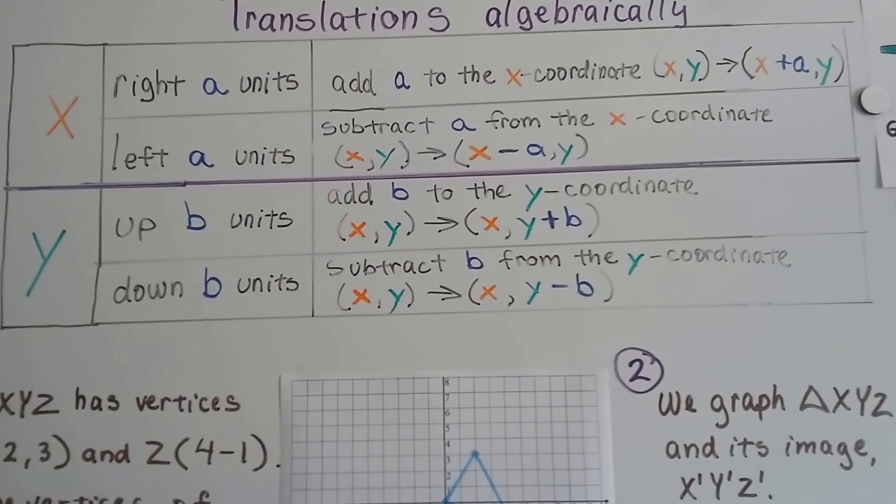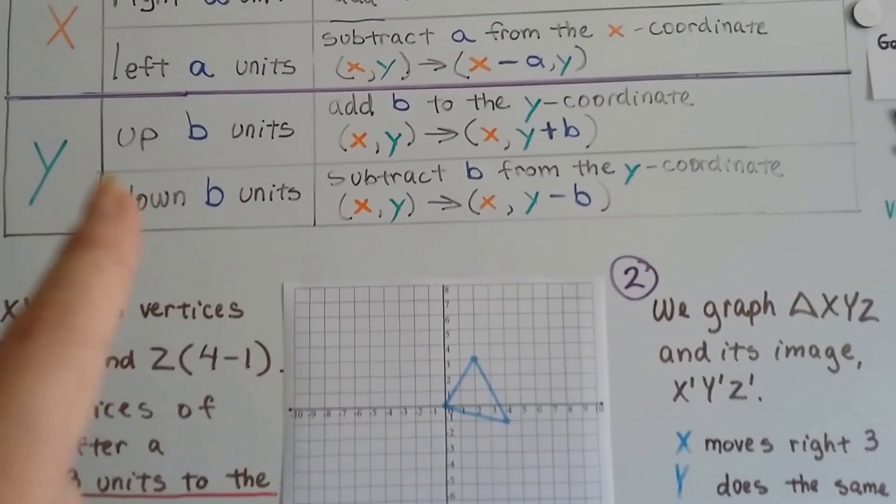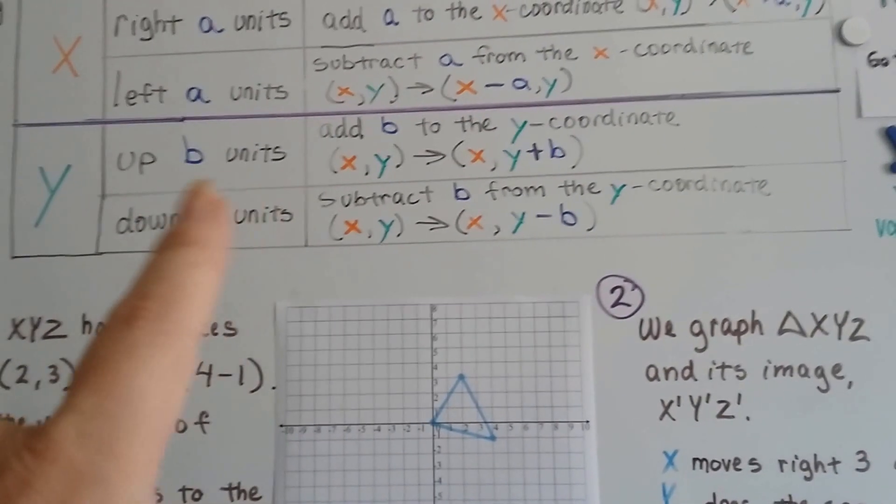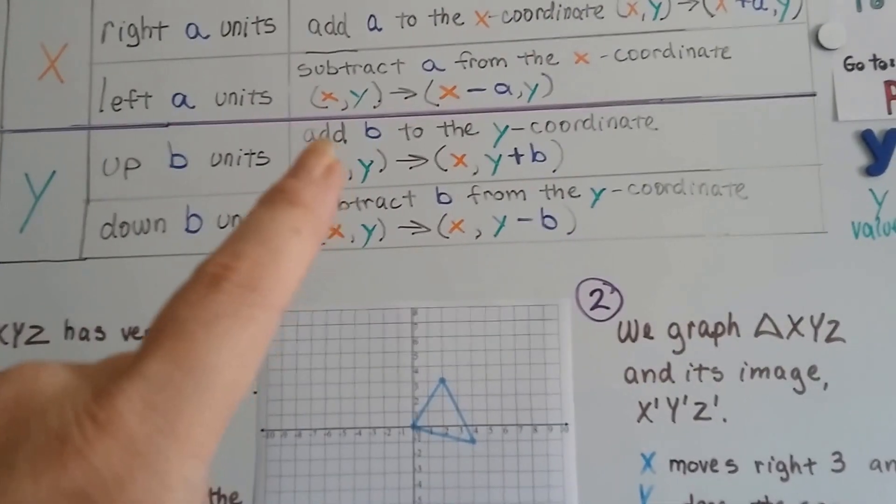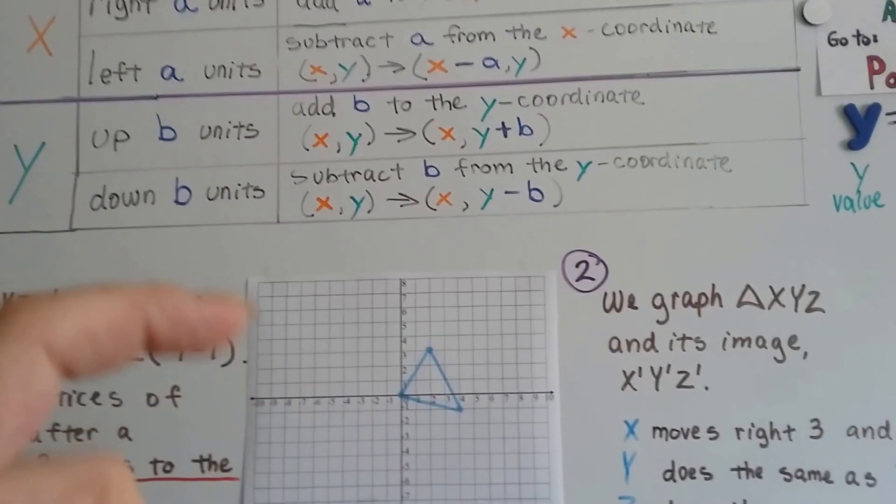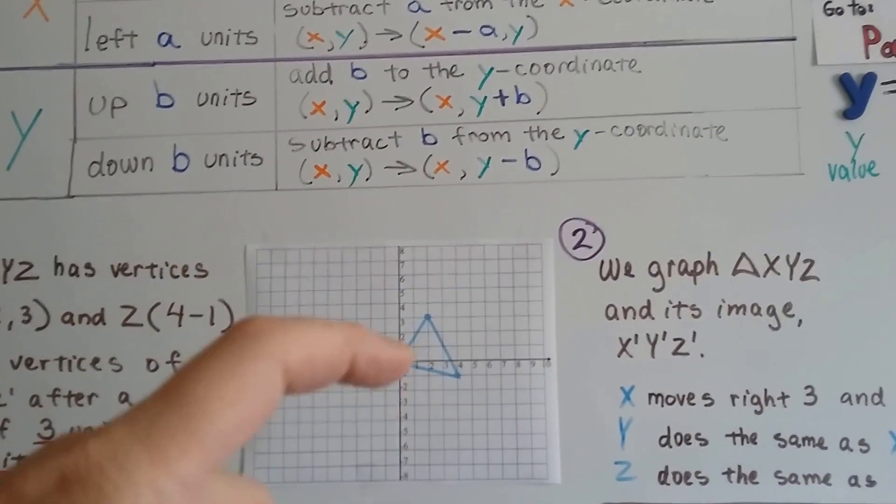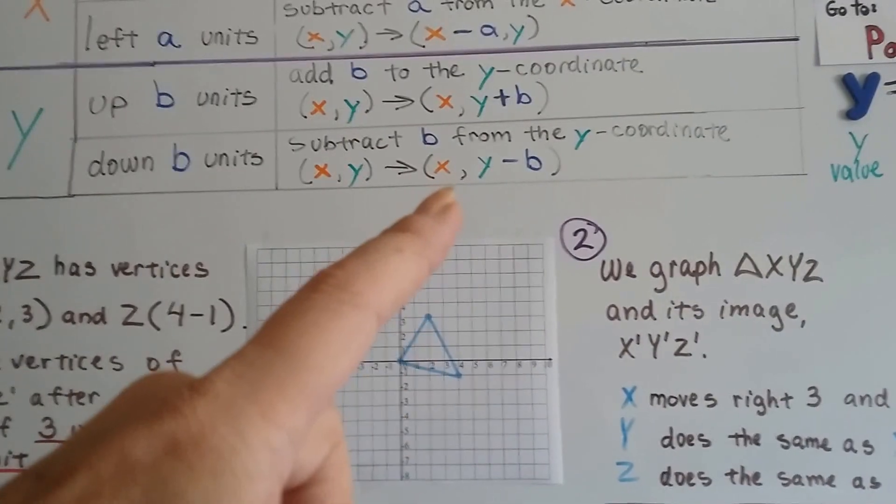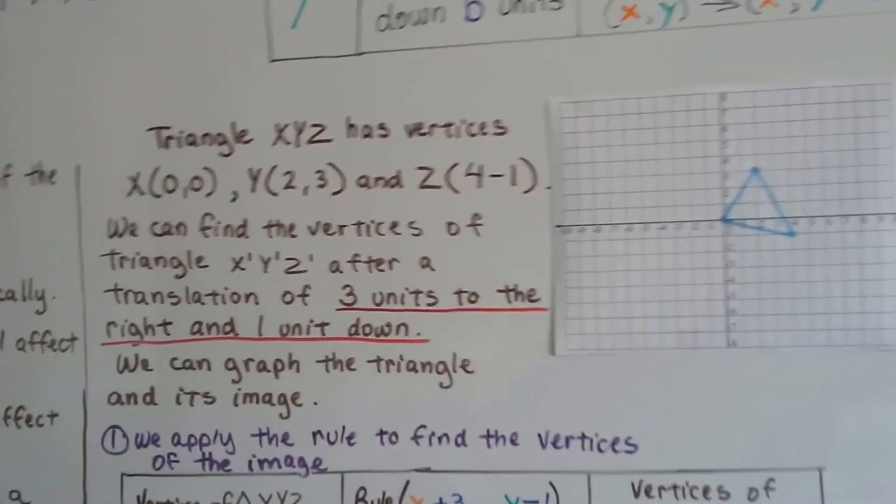And for Y, if we move up, up and down, the B number of units, whatever that number is that B is standing for, we're going to add that amount of numbers to the Y coordinate. And if we're going to go down, we're going to subtract that B number of units from the Y coordinate. So it'll be X, Y minus B. So that's how it's going to move.